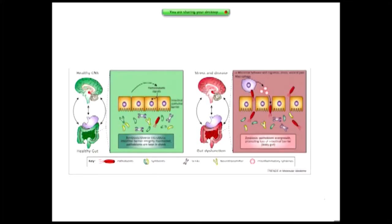Here we have a picture of the healthy CNS, where there are healthy interactions between the gut and the brain — a healthy barrier, healthy microbes in the gut, and nice things going on. In stress and disease, though, we have issues with the gut barrier: things are getting across that shouldn't be, with pathobiont overgrowth promoting leaky gut.